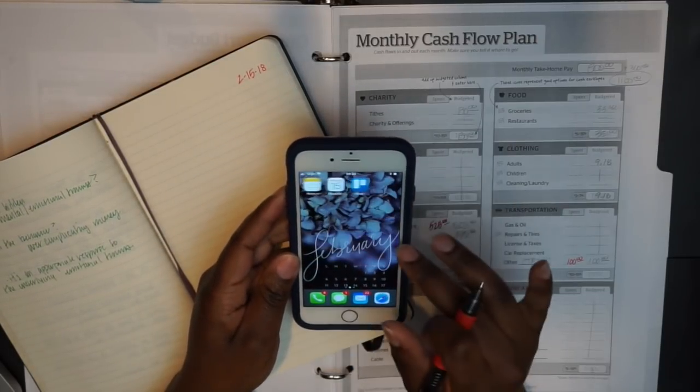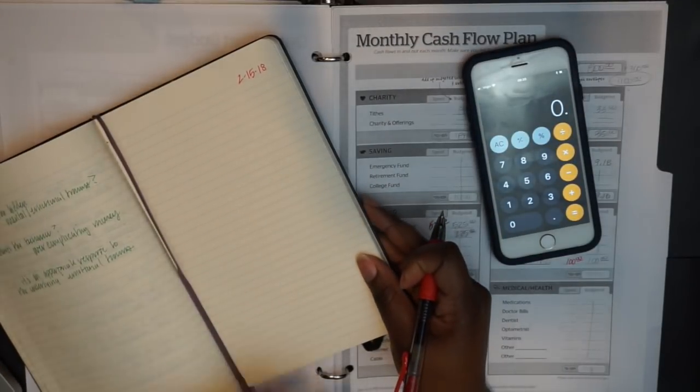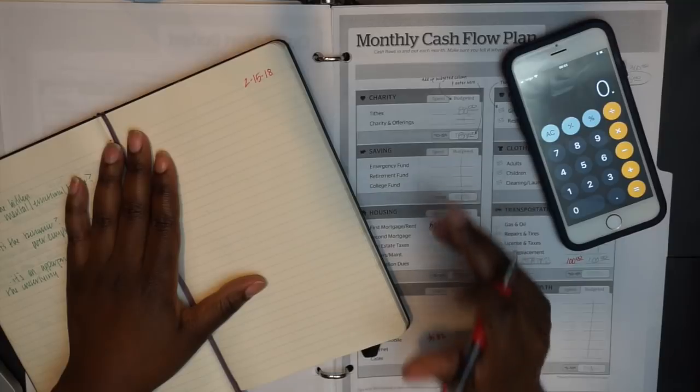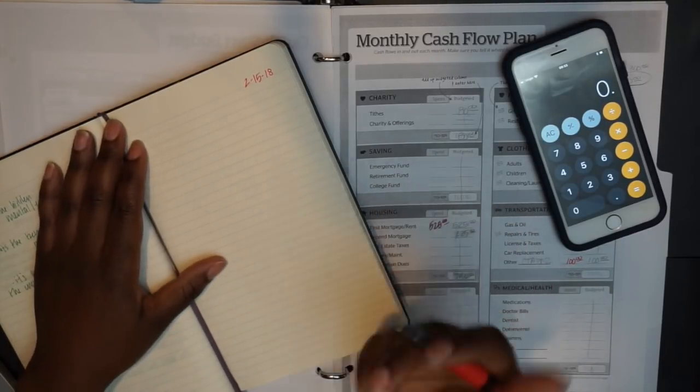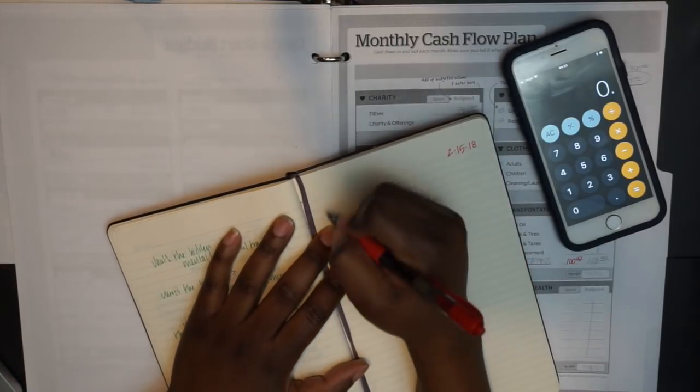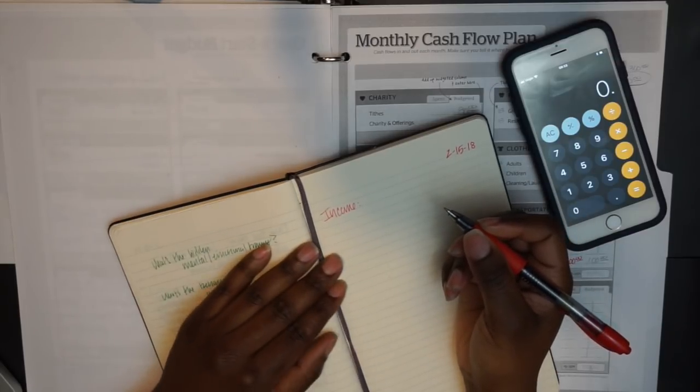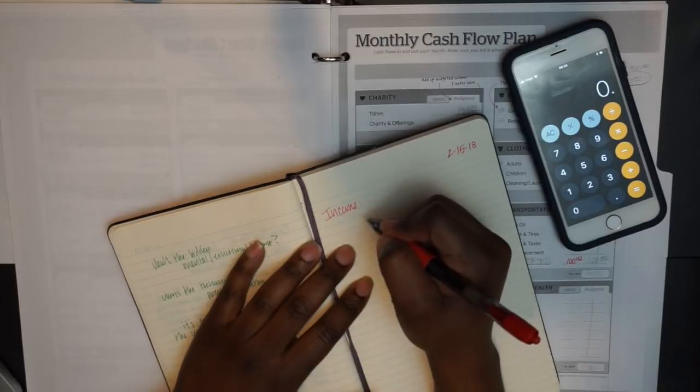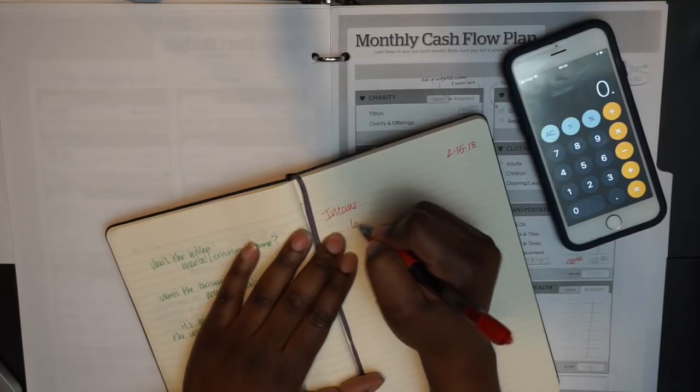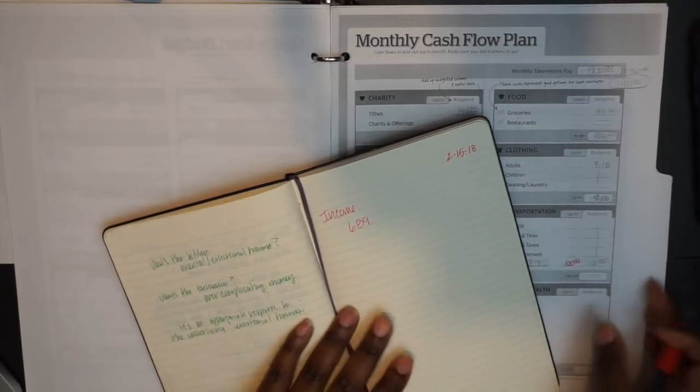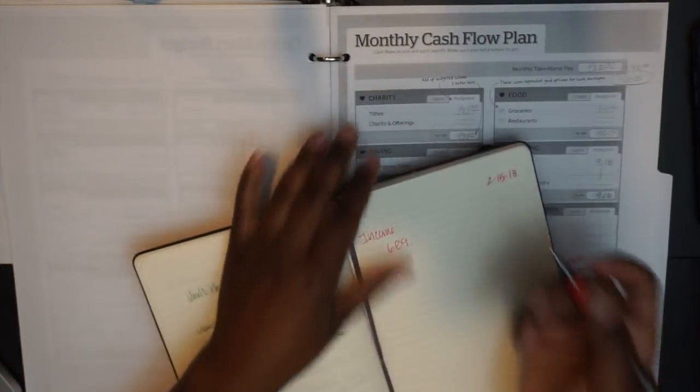So the first thing that I want to do is pull up a calculator so that we can have that for our numbers, and then I want to talk a little bit about the things that have impacted my budget so far. The number one thing having the biggest impact on my budget is income, so I started a journal entry page here and I just want to jot down my income to date. My first paycheck plus some money that I'm counting as income was $689.86.